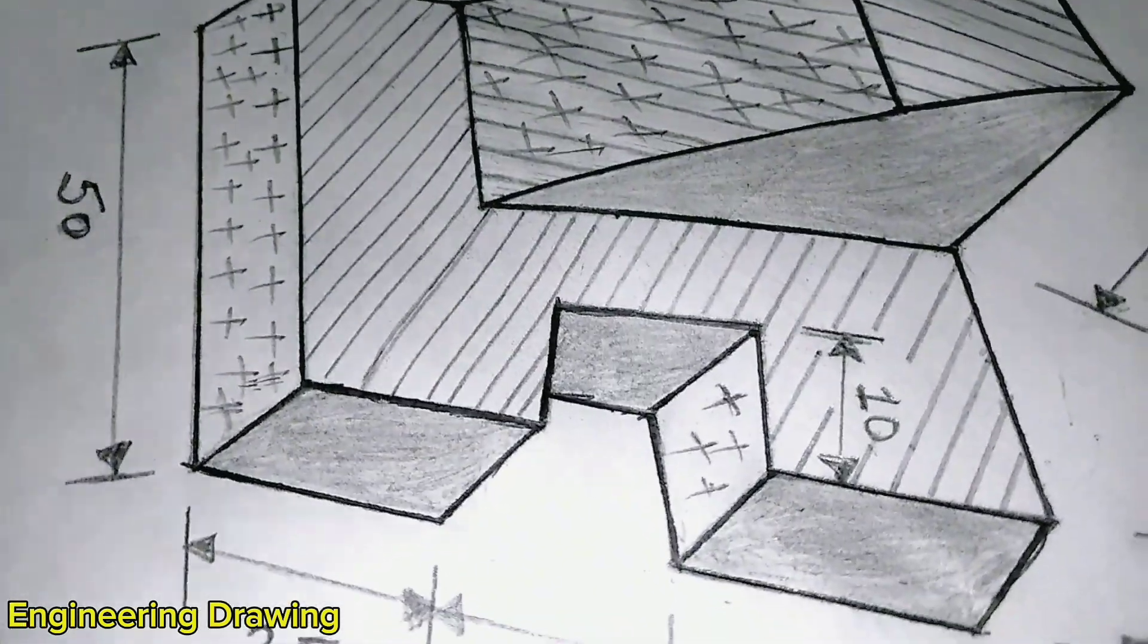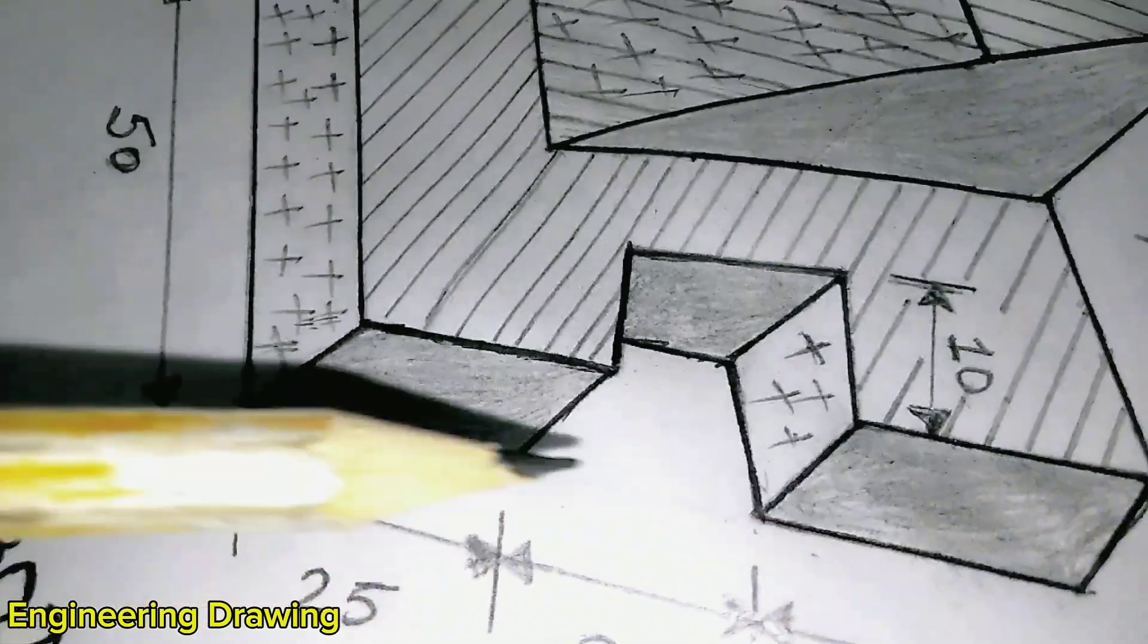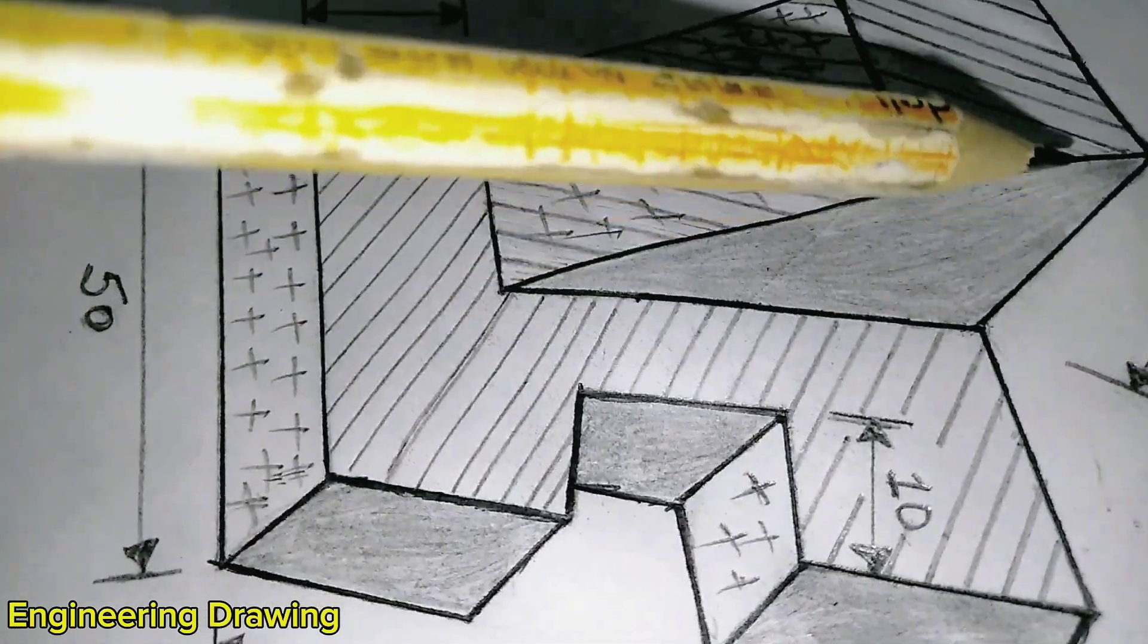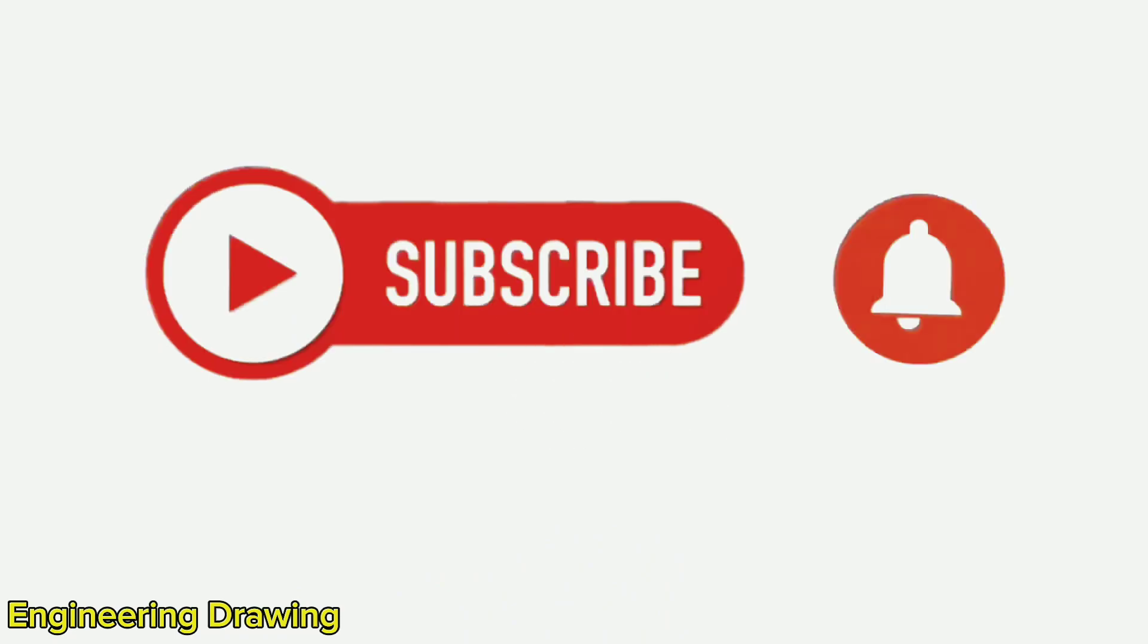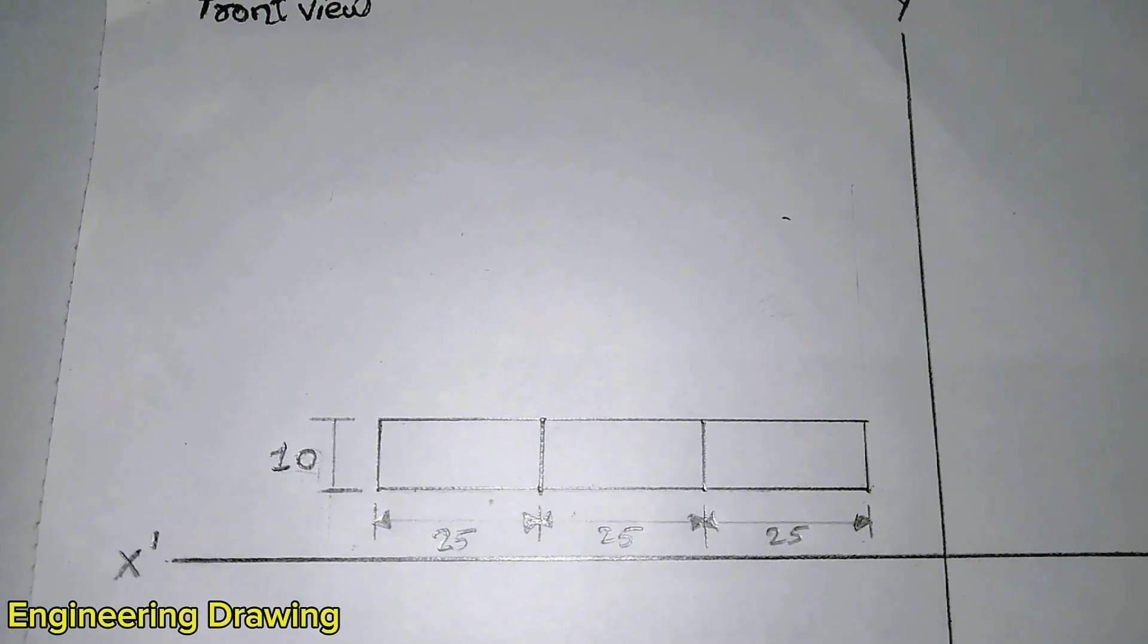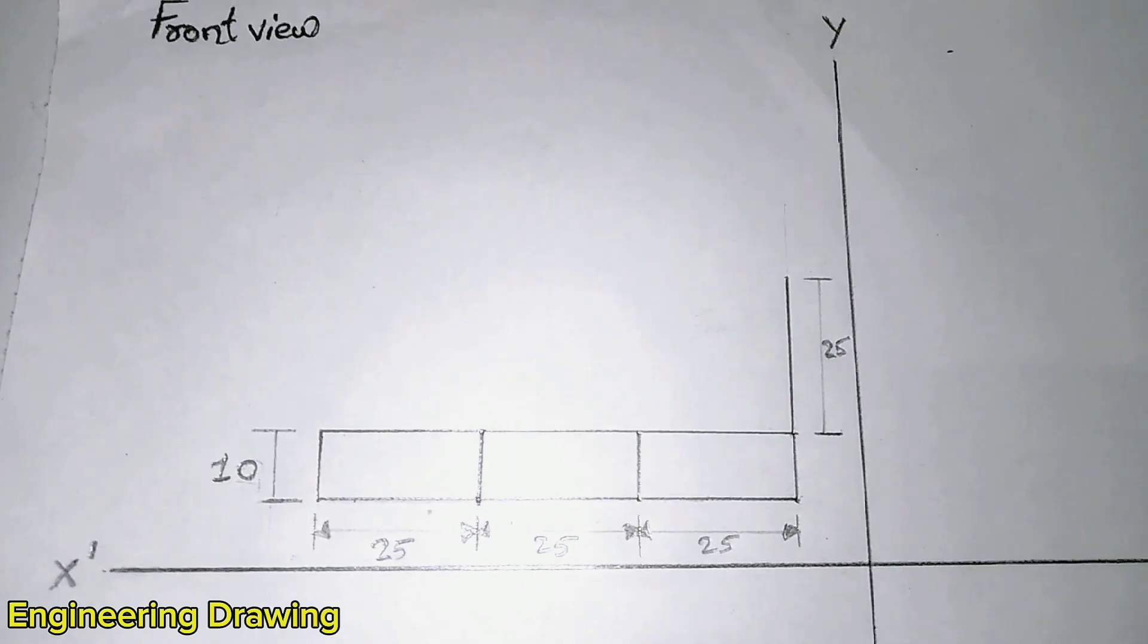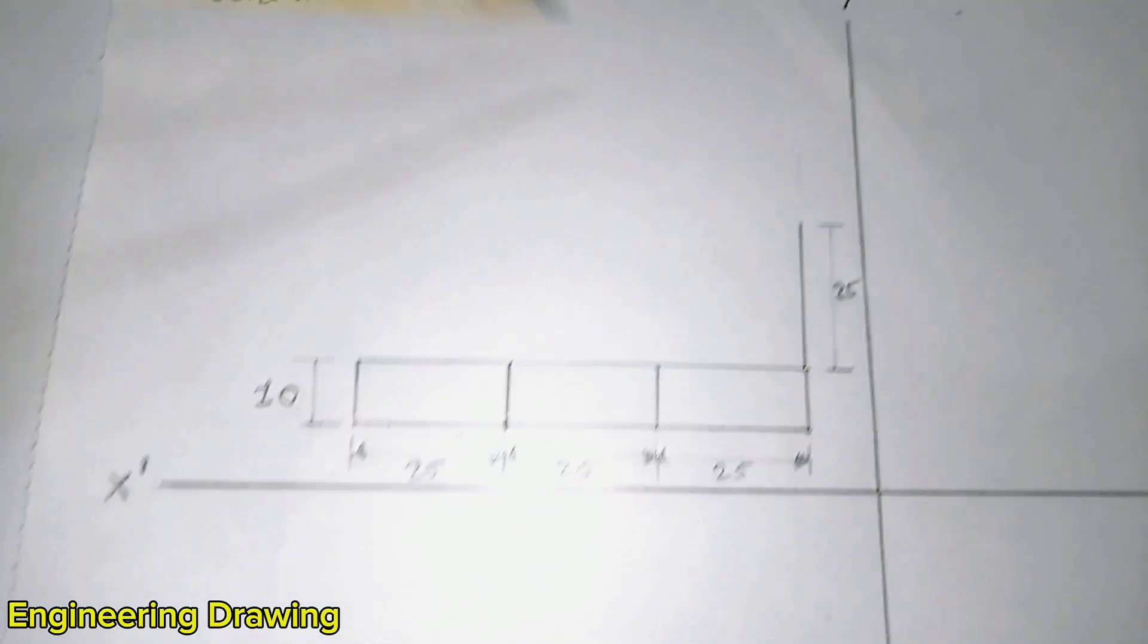You can see the total base in the front view and total height of front view is 35 mm. I took the height of the base as 10 mm. Now we will draw the remaining height of the top which is 25 mm. Now I have taken the height of 25 mm from the same line.